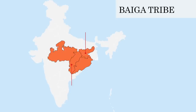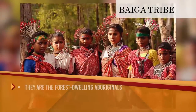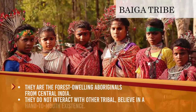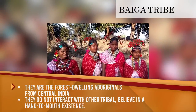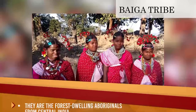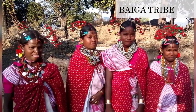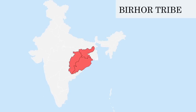Baiga Tribe: they are found in the states of Chhattisgarh, Jharkhand, Madhya Pradesh and Orissa. They are forest-dwelling originals from Central India and do not interact with other tribes; they believe in a hand-to-mouth existence. They are also found in Chhattisgarh, Jharkhand and Orissa and are known as the Hunter Tribe. This tribe is a Proto-Australoid tribe.